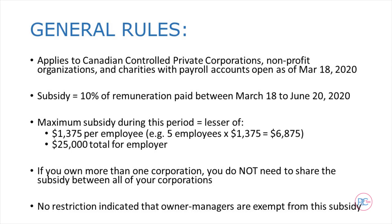So if you have five employees, for example, the maximum subsidy you can get is $6,875. Also, if you own more than one corporation, you do not need to share the subsidy between all of your corporations as you would with the small business deduction, for example. And lastly, if you own your own company and pay yourself a salary, you are also entitled to claim this subsidy on your pay, as CRA's guidelines give no indication that related or connected individuals are excluded.